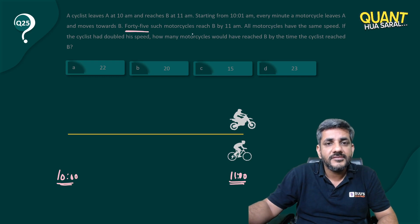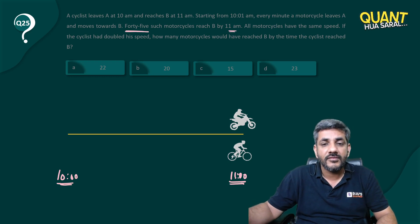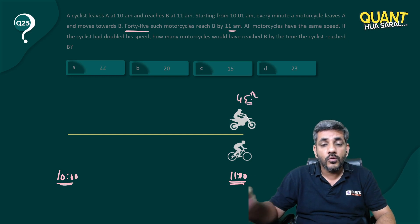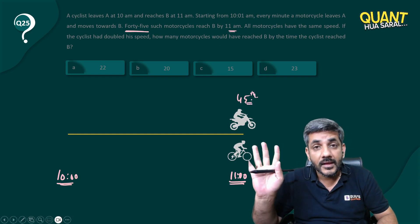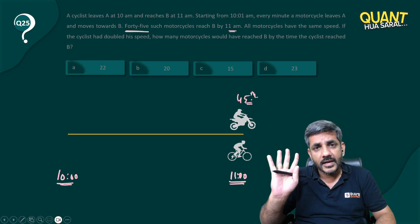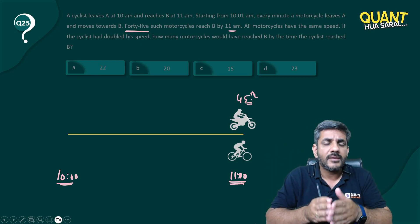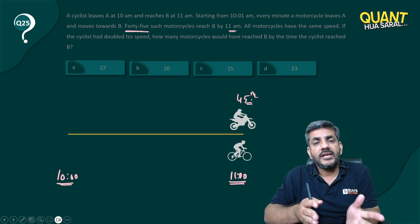Because 45 such motorcycles reach B by 11 am, so this is the 45th motorcyclist who actually reached this point at 11 o'clock. Now it is not necessarily exactly 11 o'clock, it might have been 10:59:20, 10:59:30, something like that.